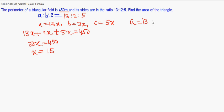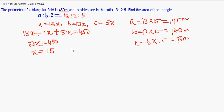If x is 15, A becomes 13×15, that is giving me 195. B will be 12×15, that is giving me 180. C is 5×15, that is 75 meters. S is semi-perimeter, so it is half of 450, that is giving us 225.